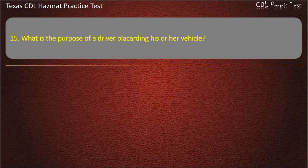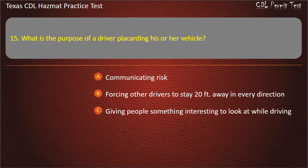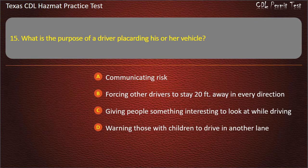Question 15: What is the purpose of a driver placarding his or her vehicle? Communicating risk. Forcing other drivers to stay 20 feet away in every direction. Giving people something interesting to look at while driving. Warning those with children to drive in another lane. Answer: Communicating risk.